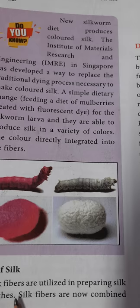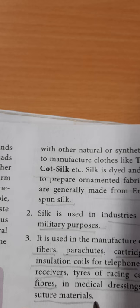Uses of silk: silk is utilized for preparing silk clothes. Silk fibers are now combined with other natural and synthetic fibers to manufacture terry silk, cot silk, and silk-cotton saris. Silk is dyed and printed to prepare ornamented fabrics, generally made from eri silk and spun silk. For industrial and military purposes, silk is used in parachutes, cartridge bags, insulation coils for telephones and wireless receivers, tires of racing cars, filter fibers, medical dressings, and suture materials.